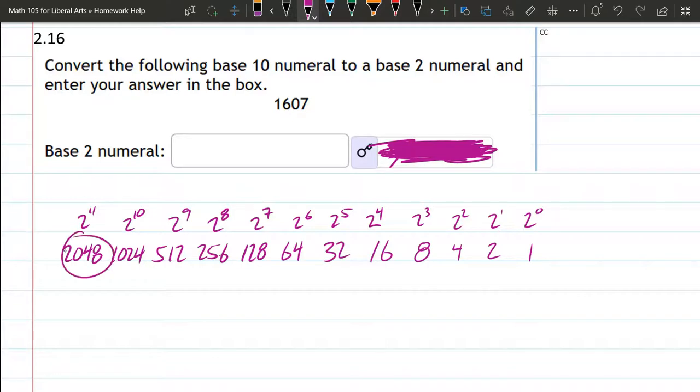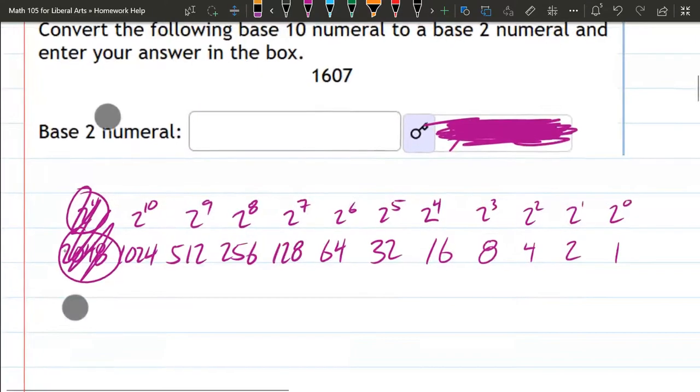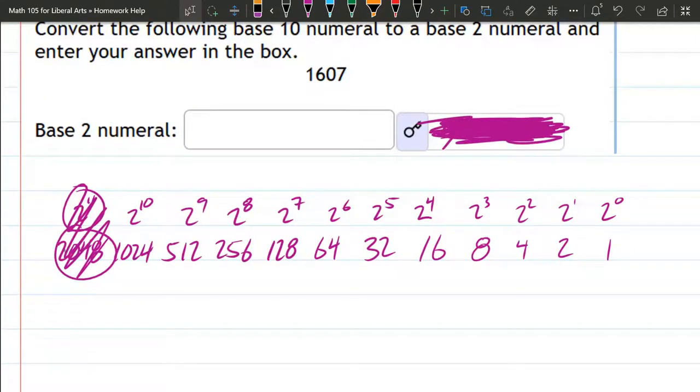How do I know? Because that number is bigger than that number, so I cannot have any 2^11 in this number. That would be too big. So we do not have any of these. Let's just go ahead. We'll leave that there. Okay, so here we go.